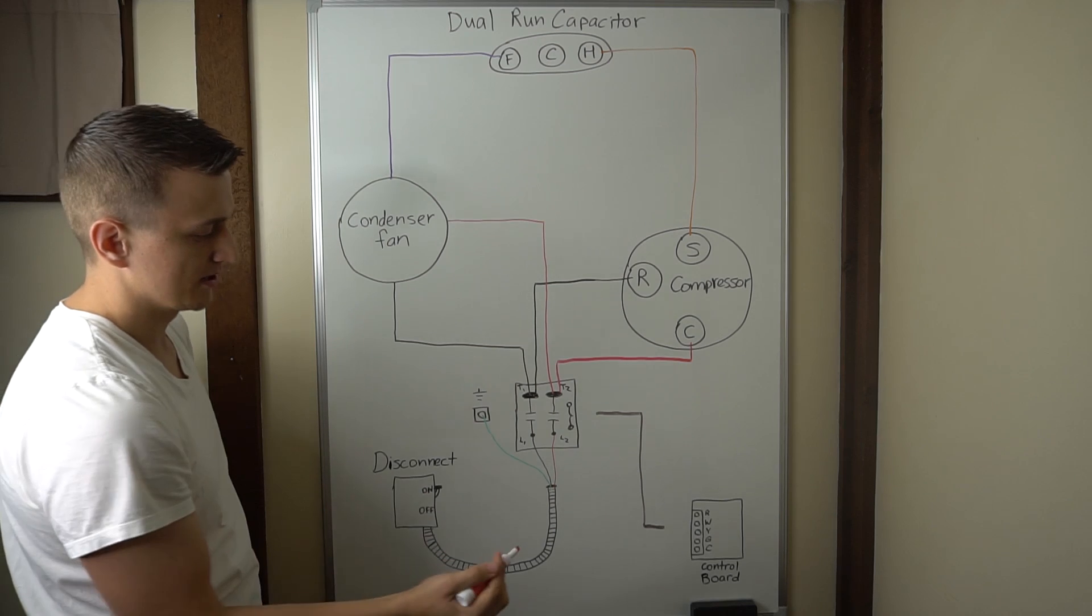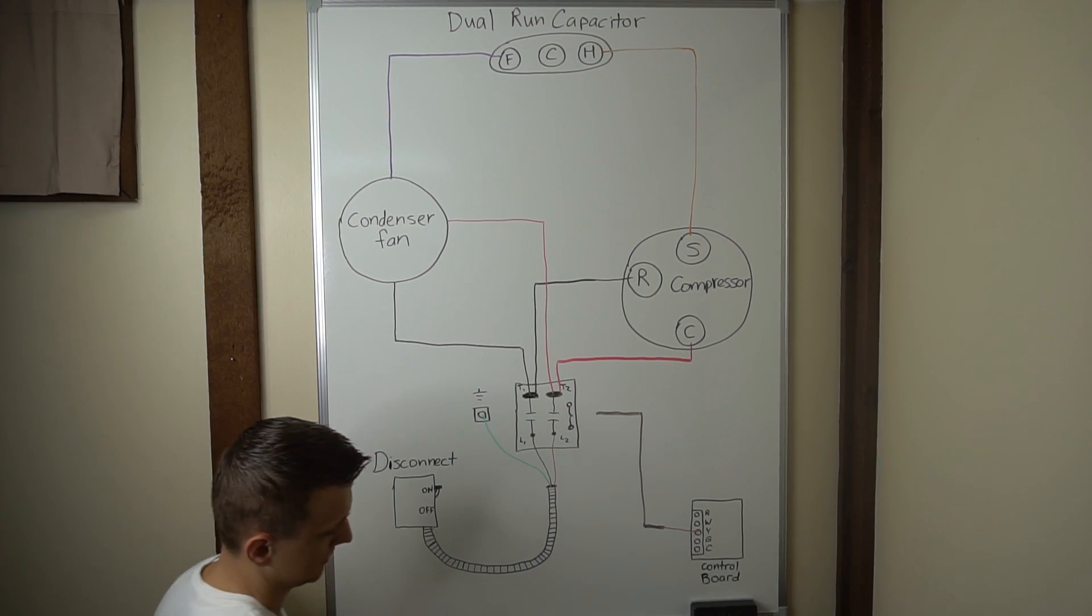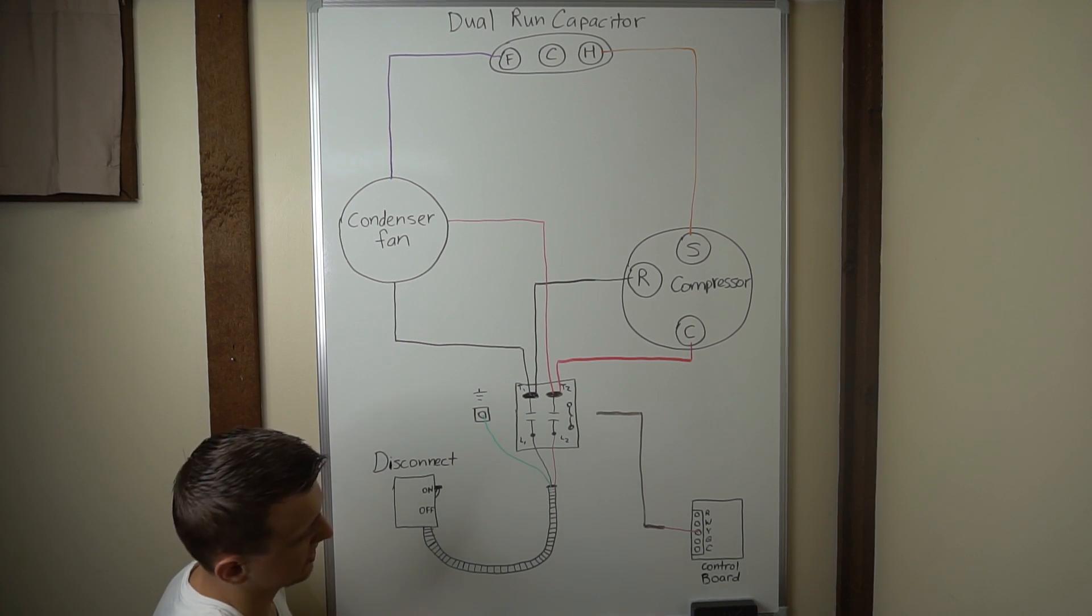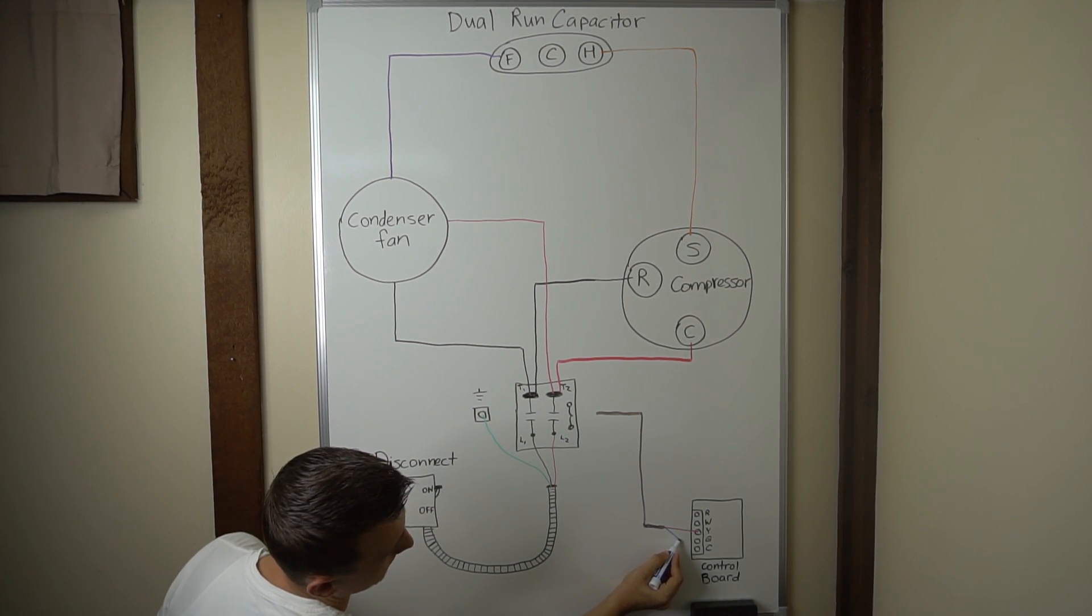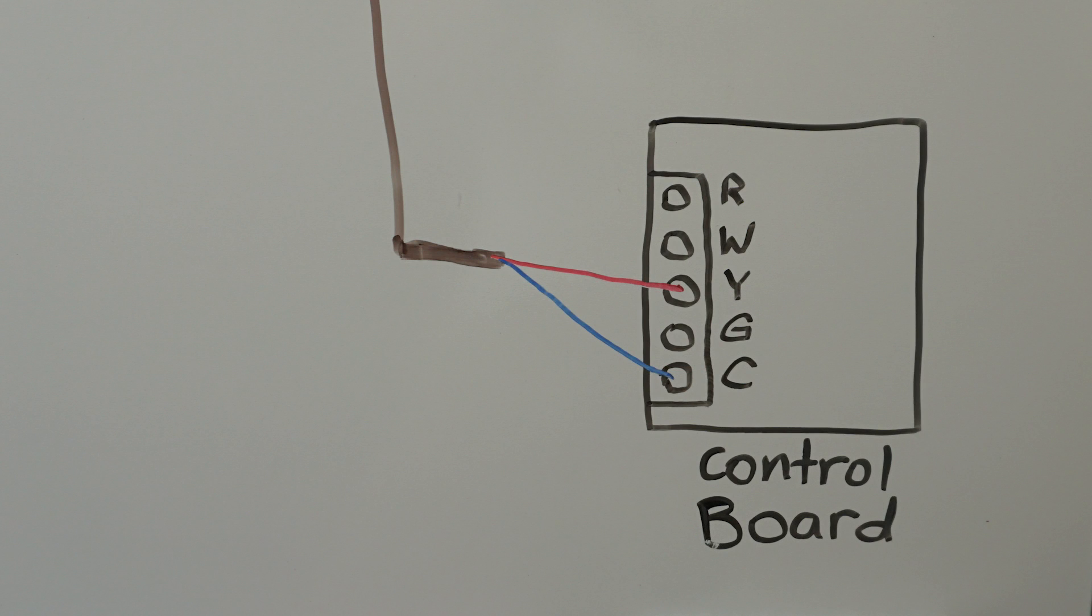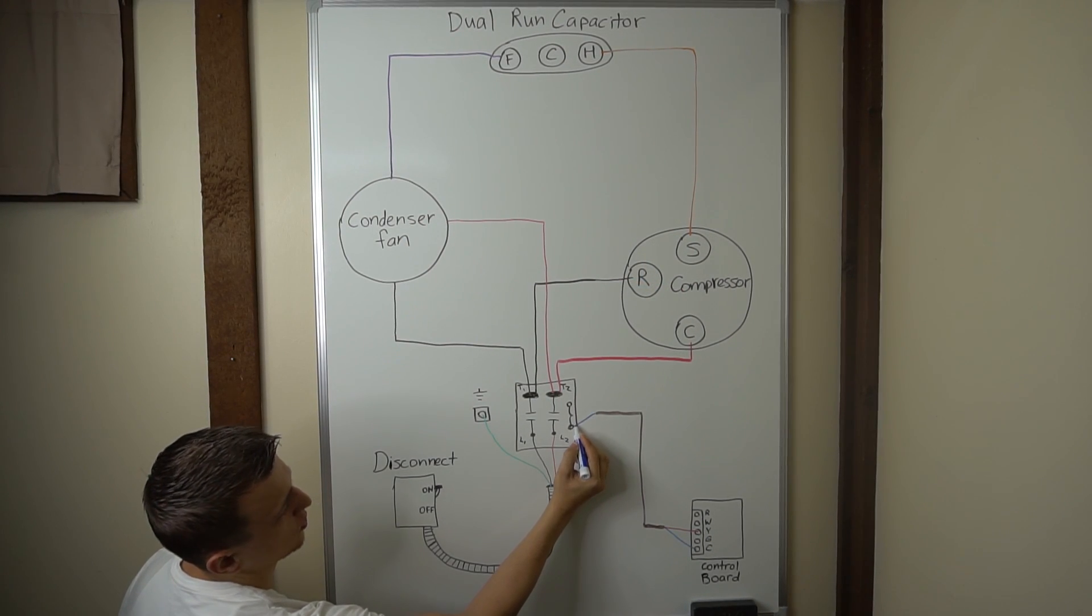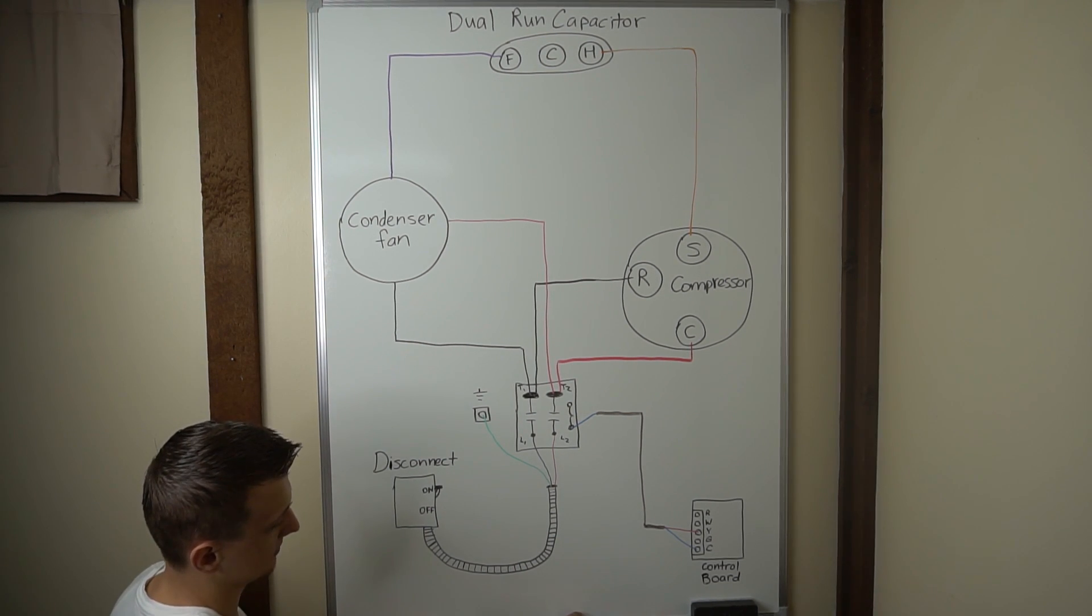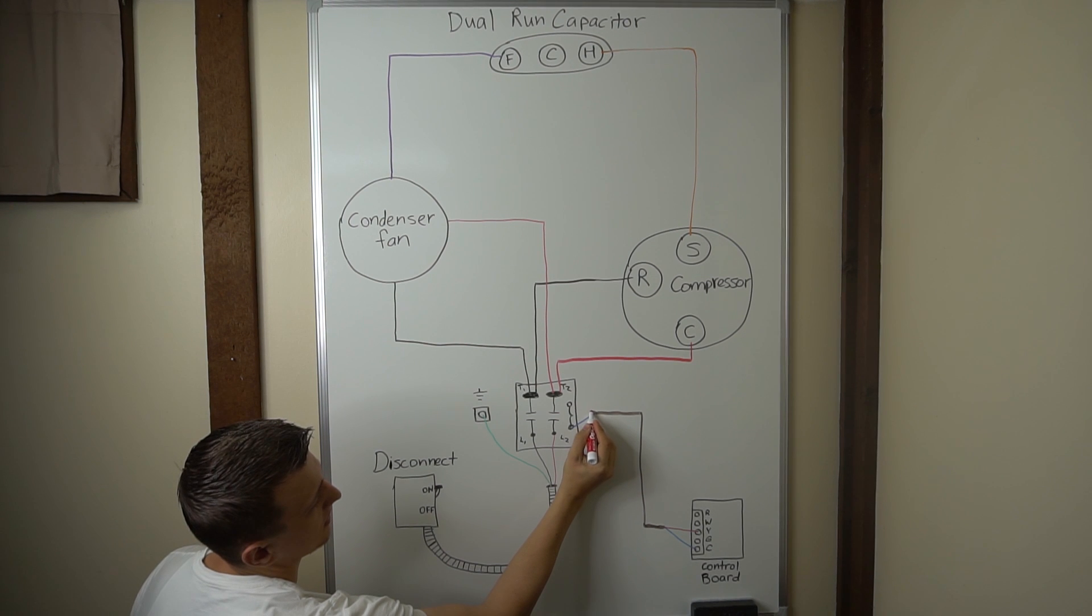And these wires are hooked up to Y and C on the control board. A lot of times it'll be a red and a white wire. So the Y is going to be supplying the 24 volts and the C of course is the common. And then on the other end, those two wires will go to the contactor coil. One on one side and one on the other.